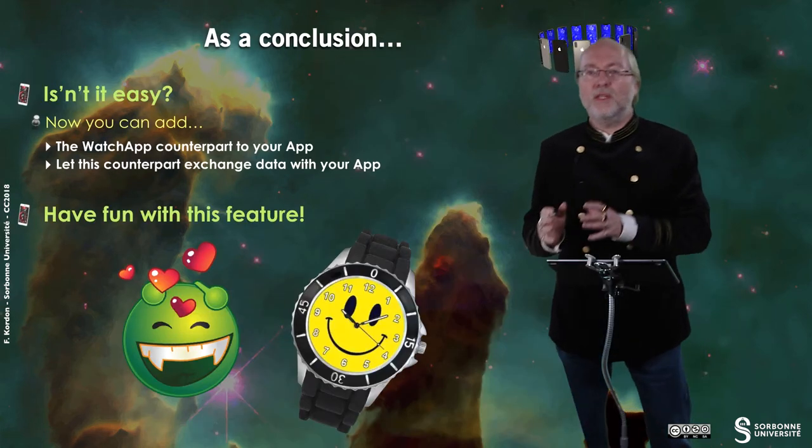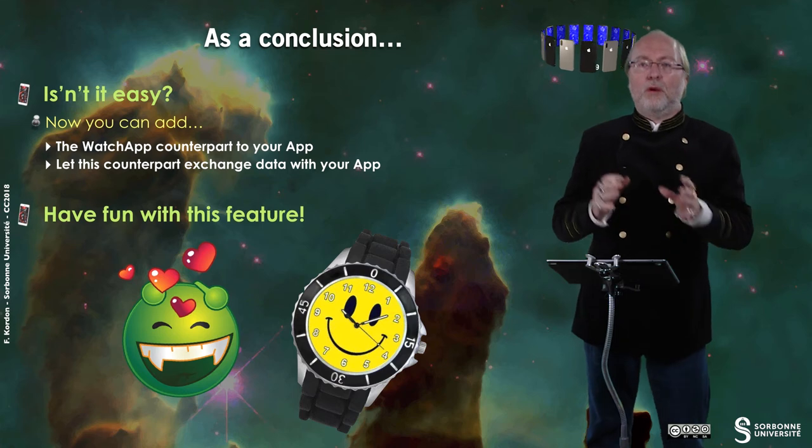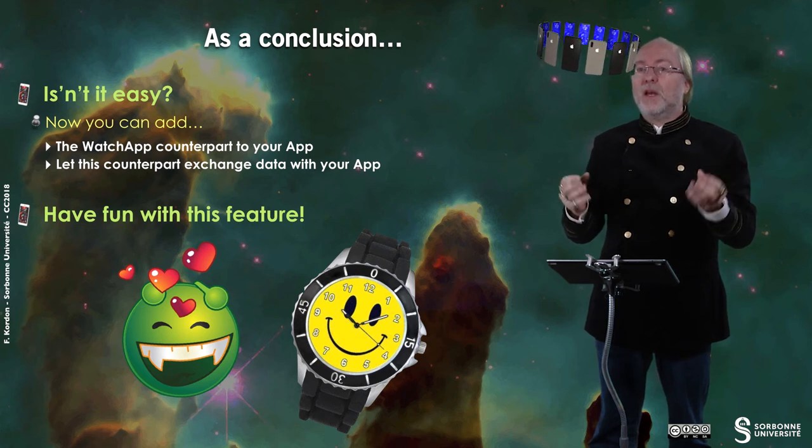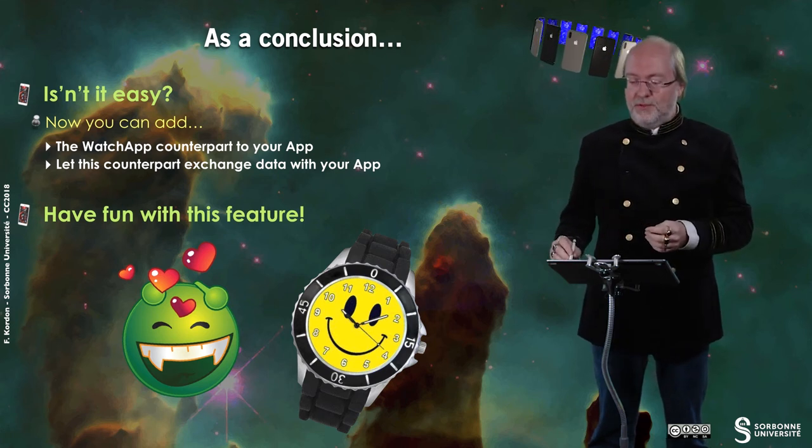This is all — it's very easy. You can add a watch counterpart to your apps. Remember that since it's a dictionary that you send, you can serialize your information and send it to the watch from the phone or vice versa. The two elements can really exchange information — you are starting with a distributed system. I hope you will have fun with this feature. Thank you for your attention. See you later.